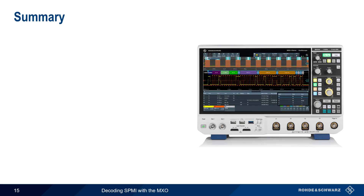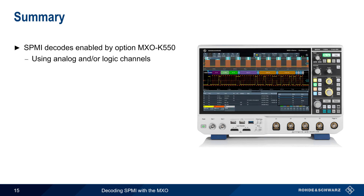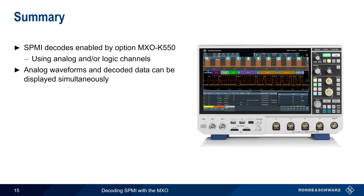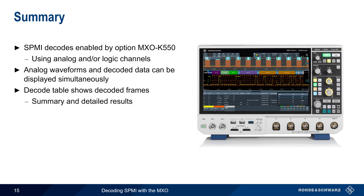Let's end with a brief summary. SPMI decodes on MXO Series Oscilloscopes are enabled by the K550 option. Connections to the device under test can be made using either the scope's analog channels or logic channels. Both analog waveforms and decoded serial data can be displayed simultaneously. Decoded frames are shown in a decode table in per-frame and per-field formats. It's also possible to filter by frame type or frame content.